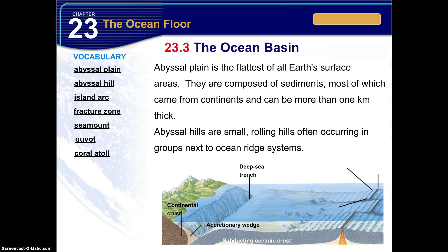A U.S. Navy mini submarine reached the bottom of the trench in 1960, and in 1995 a Japanese probe made the most accurate measurement of its depth. Adjacent to the trench lies a volcanic island arc known as the Mariana Islands. On the abyssal plain we also have what are called seamounts and guyots, which we'll touch on in a little bit.